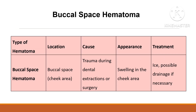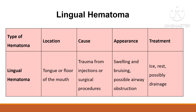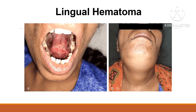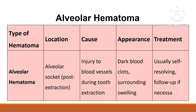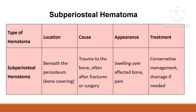Buccal space hematoma typically occurs after dental extraction or surgery. Lingual hematoma forms on the tongue or the floor of the mouth, due to trauma or accidental injury such as needle puncture during injection or surgical procedure. Alveolar hematoma is located in the alveolar socket, often after tooth extraction, due to injury to blood vessels during the extraction process.